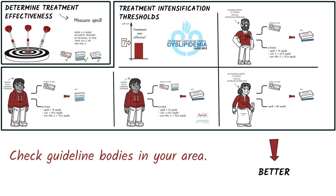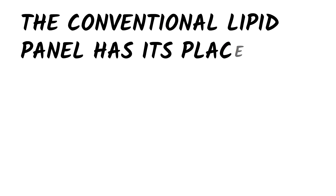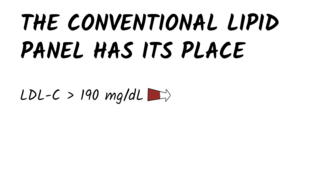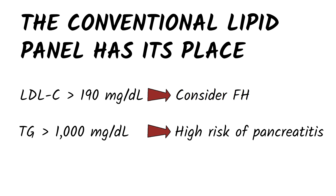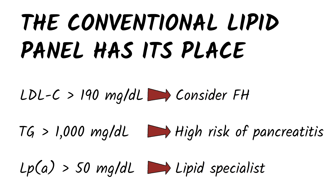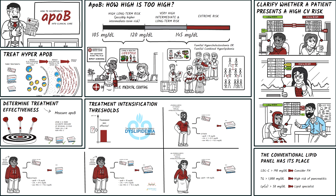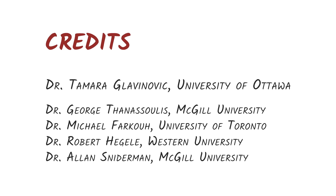The general principle is that lower is better. So should we entirely disregard conventional panels? The answer is no. An LDL-C level greater than 190 mg per deciliter is further indication of a familial component, and you should consider FH. Triglyceride levels greater than 1,000 mg per deciliter point to a high risk of pancreatitis, and an Lp(a) greater than 50 mg per deciliter may indicate a case better managed by lipid specialists — we'll discuss this further in the next video. The conventional lipid panel has its place, but ApoB is essential for clarifying whether a patient is at high cardiovascular risk and helping you determine whether the treatments you are providing are effective. Stay tuned for more information on how to incorporate Lp(a) into clinical care.